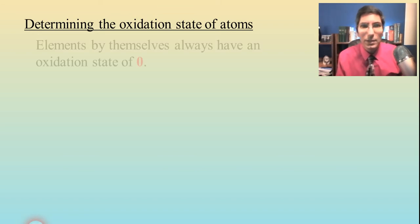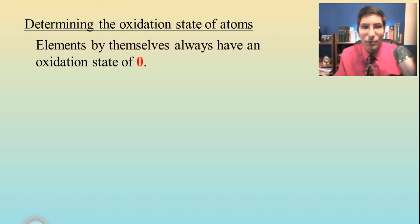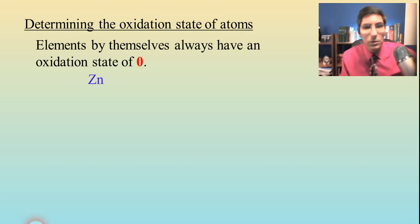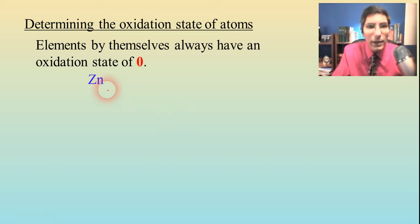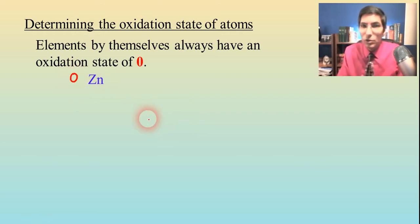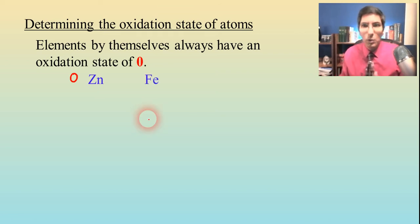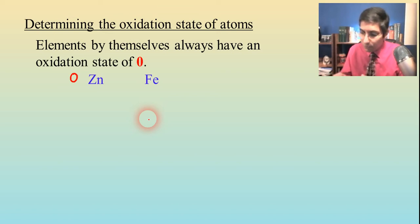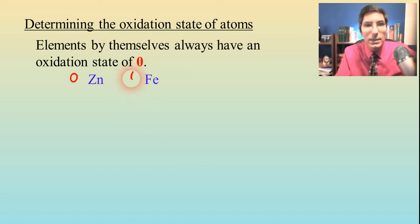Let's start with the easy ones. Elements that are sitting by themselves always have an oxidation state or a charge of zero. So what does that mean? Well, if you see just a plain old atom sitting around like zinc, we know that's going to be zero. It's not an ion in solution. It's just a solid metal — it is zero. Or iron: when it's in solution, iron can be plus two or plus three, but when it's just plain old iron metal, it is zero.